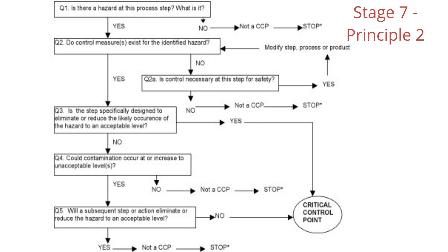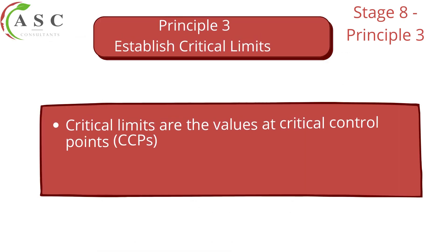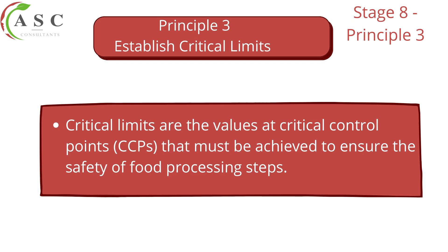Now let's move to principle three, which is stage eight — establishing critical limits. A critical limit is the value or process parameter that differentiates a safe and unsafe measure, ensuring that your product is produced according to the requirements of your processes. For example, since cooking is a CCP, a critical limit would be the temperature that must be reached in order to remove a significant hazard or bring it under control.